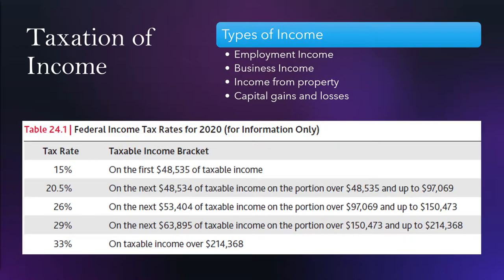You have different tax rates depending on the bracket you are in. On the first $48,535 you will be taxed at 15%. This is in Canada for 2020, so the rates are a bit different — the income brackets are a bit different for 2021. If you make $50,000, the first $48,535 is taxed at 15%, but that extra $1,500 will be taxed at the 20.5% rate. It's not that you move up in a tax bracket — just that portion of income in that bracket is taxed at that rate.